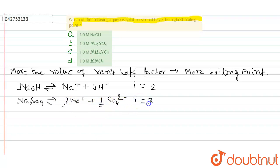For NH4NO3, it dissociates into NH4+ and NO3- minus. So for NH4NO3, van't Hoff factor i equal to 2. And for KNO3, van't Hoff factor i equal to 2.